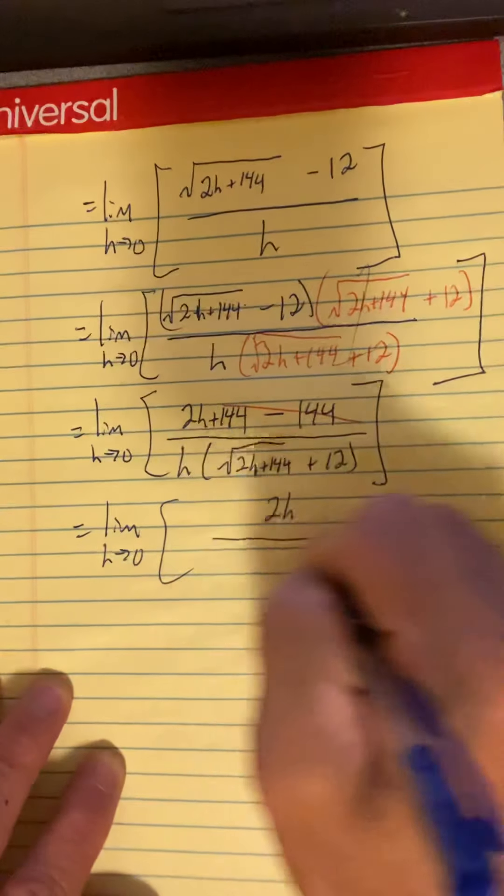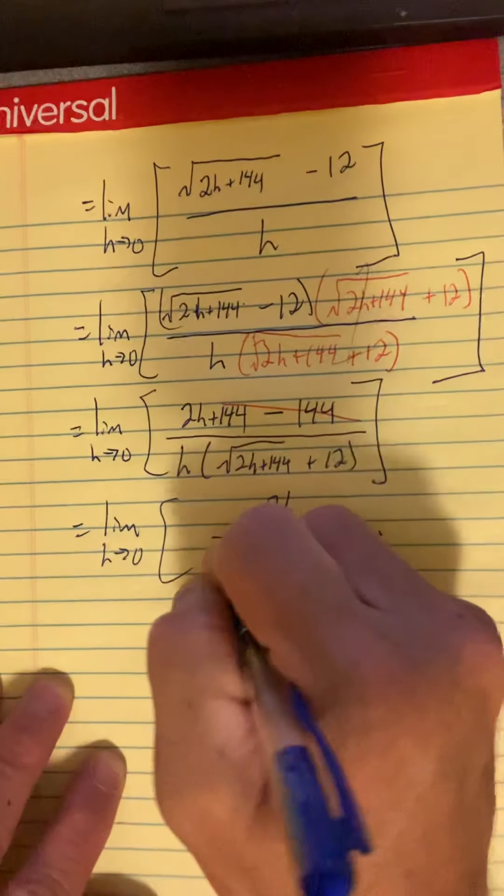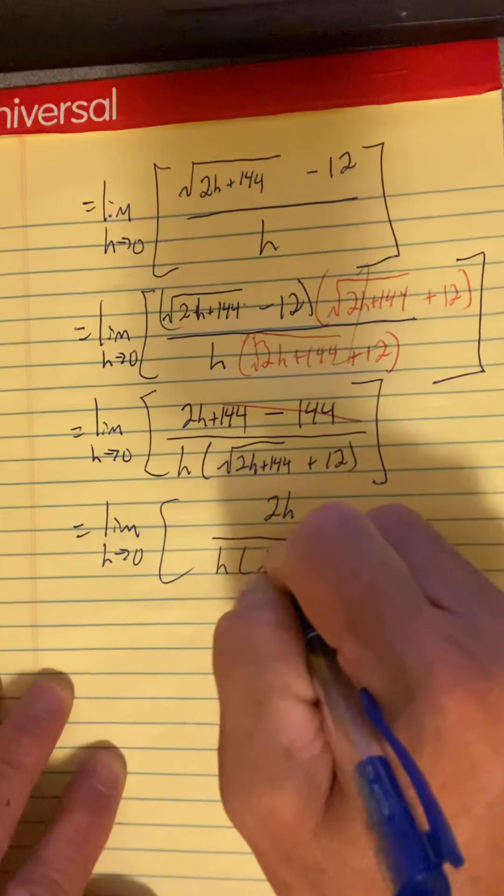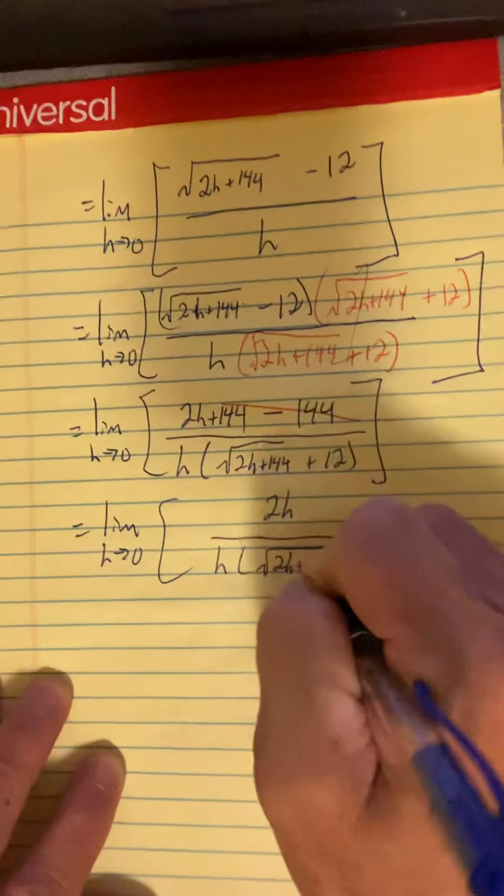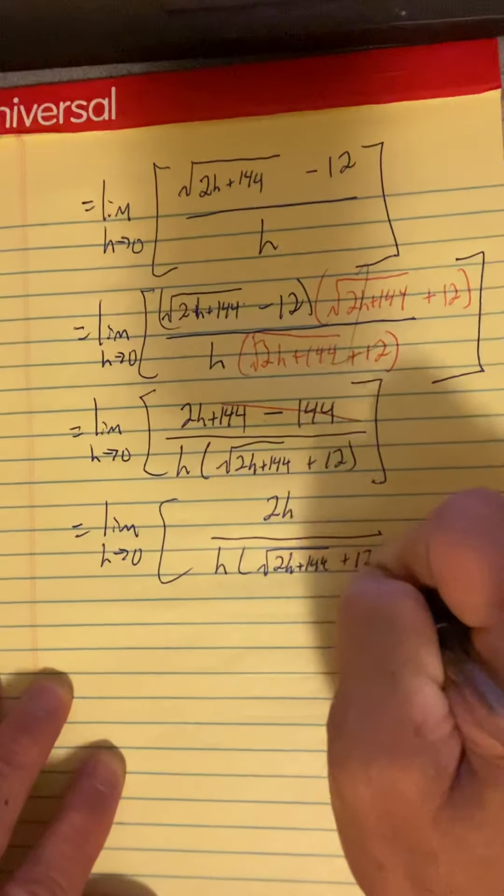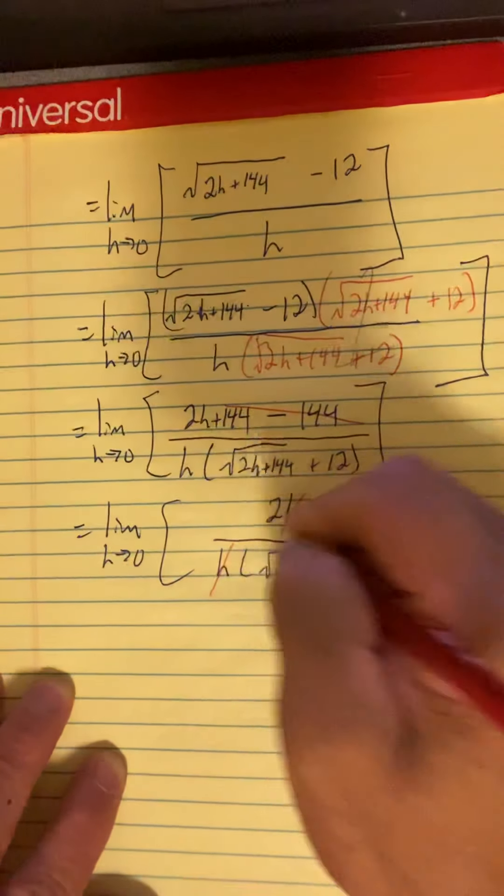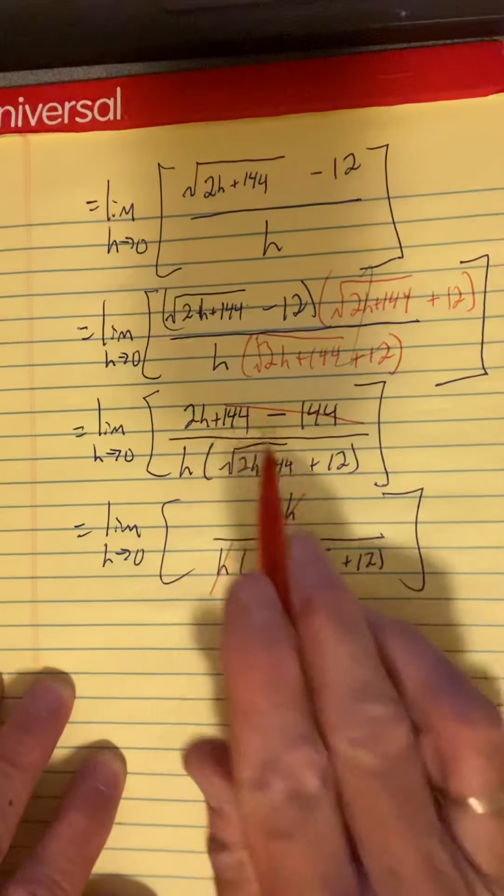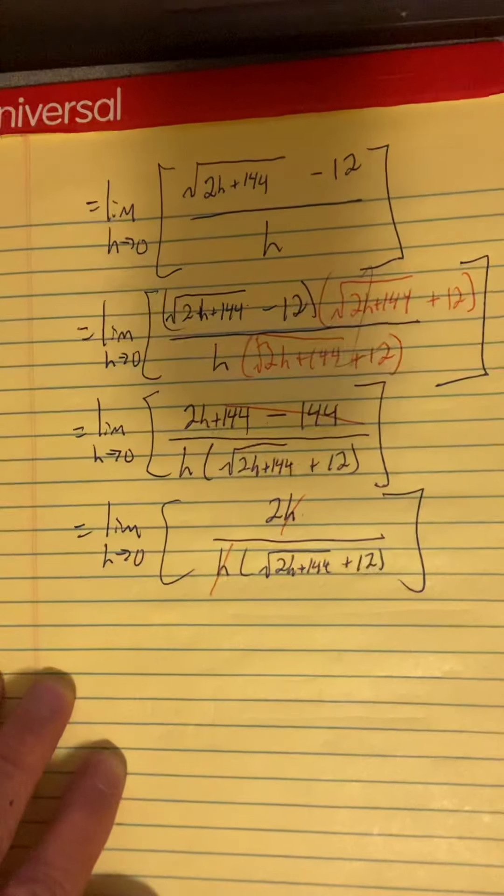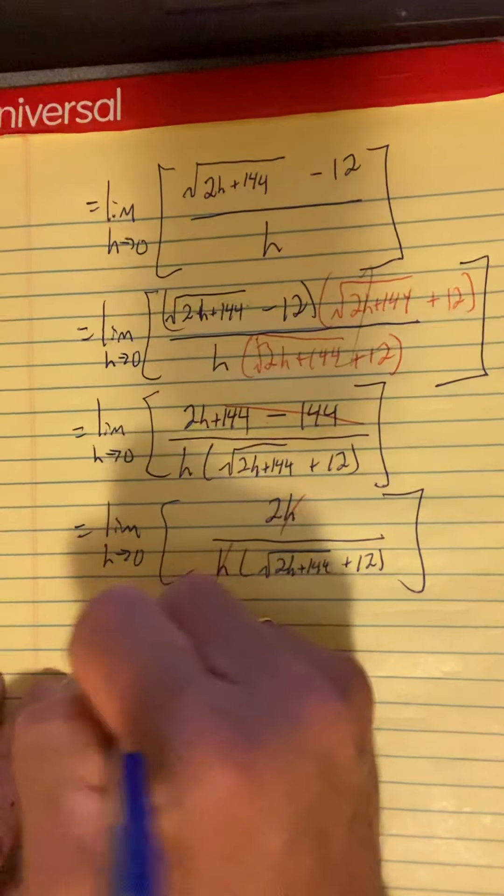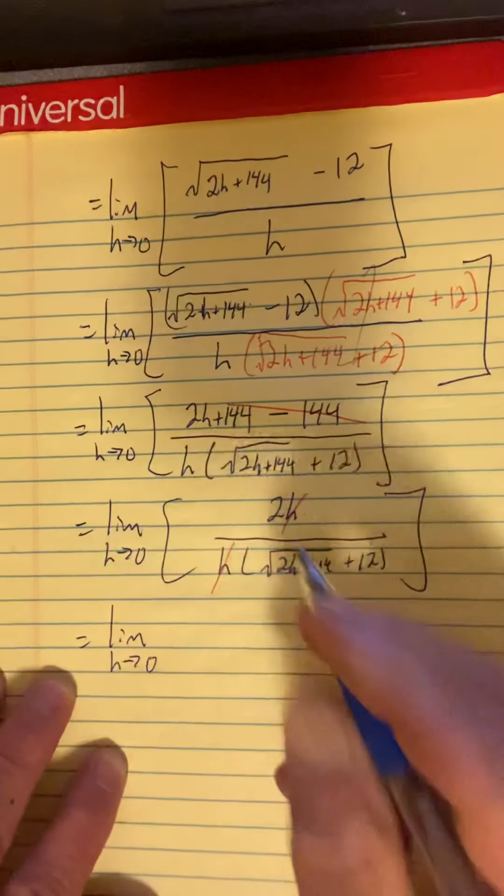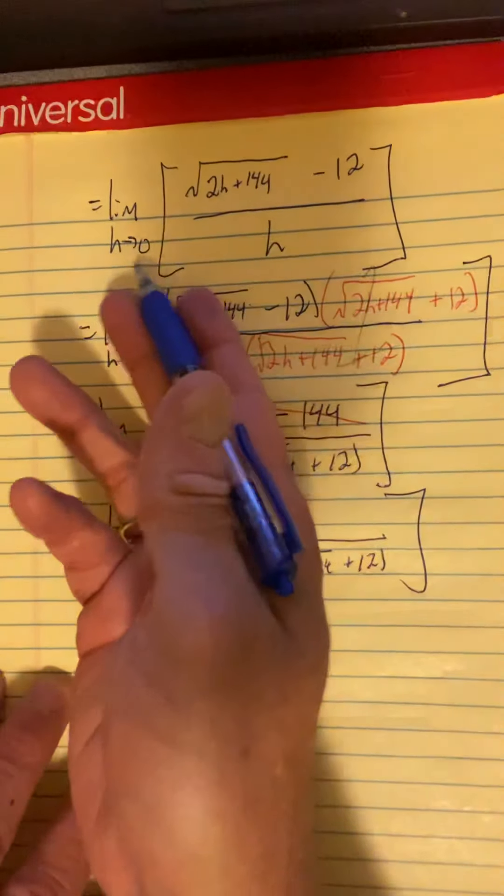See, we can reduce the common factor now. We have two times h. And down there, we have h times a really complicated mess. So now you can reduce because now the common factor can reduce. Not legally on that step anyway, but we can here.